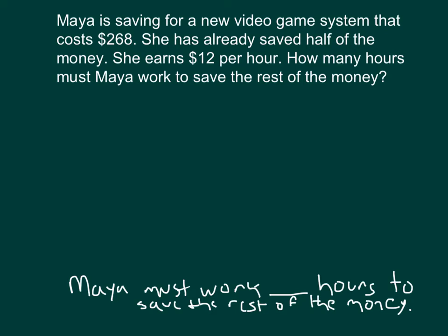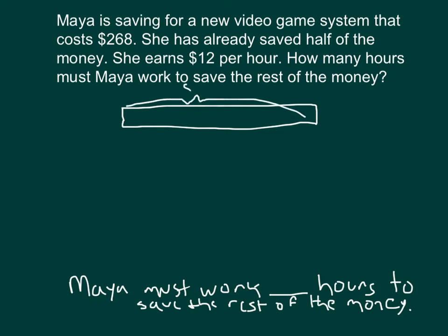The whole, or the total amount of money that she needs to save, is $268. She's saved half of that already, so we'll divide the bar in half. This is the amount she has saved so far, which is half. How do we get half of 268? We divide it by 2.